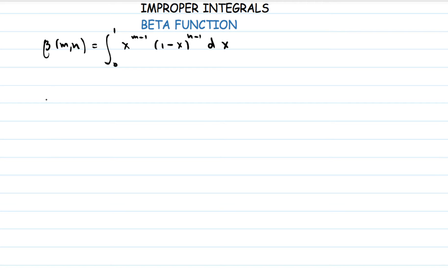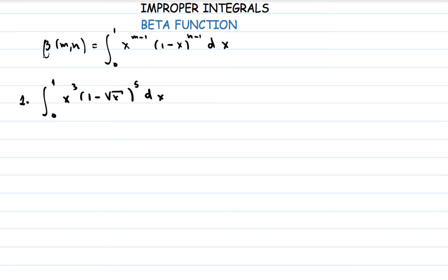The first example we're going to solve is: the integration from 0 to 1 of x cubed times (1 minus the square root of x), all raised to 5, dx. We want to find the value of this expression. We can give it a numerical value, and it can be simplified by finding the values of m and n, which describe what result the whole expression gives us.